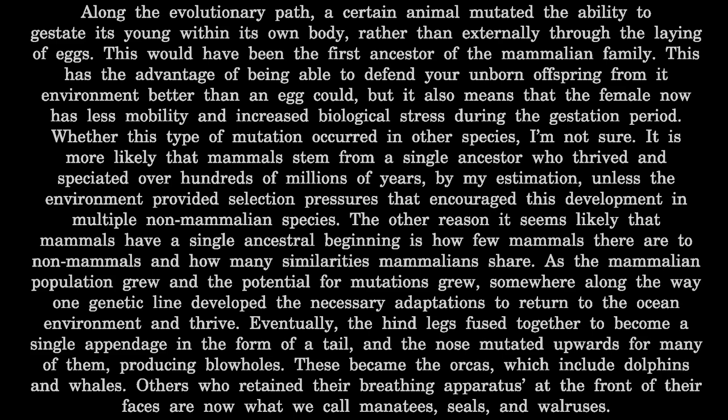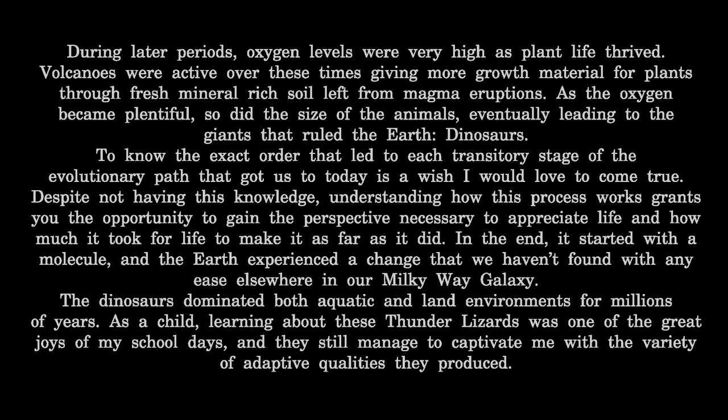As the mammalian population grew and the potential for mutations grew, somewhere along the way one genetic line developed the necessary adaptations to return to the ocean environment and thrive. Eventually the hind legs fused together to become a single appendage in the form of a tail, and the nose mutated upwards for many of them, producing blowholes. These became the orcas, which include dolphins and whales. Others who retained their breathing apparatuses at the front of their faces are now what we call manatees, seals, and walruses. During later periods, oxygen levels were very high as plant life thrived. Volcanoes were active, giving more growth material for plants through fresh, mineral-rich soil from magma eruptions. As oxygen became plentiful, so did the size of the animals, eventually leading to the giants that ruled the earth — dinosaurs.